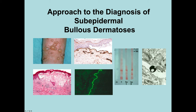Underneath, we see the histology. There's a subepidermal blister, and in the bottom right quadrant you can see that the dermal papillae project into the blister cavity — this is sometimes called festooning, and is a feature one typically associates with bullous pemphigoid. In the middle, we see IgG deposition in a linear fashion along the basement membrane region, characteristic of bullous pemphigoid.